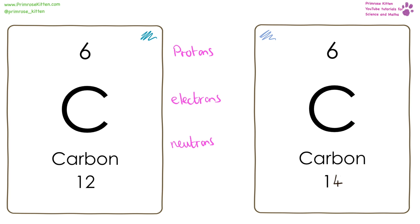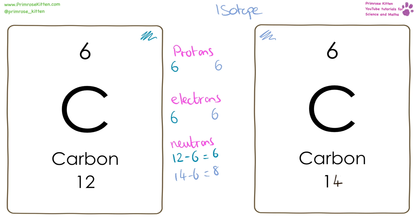Here we have two isotopes of carbon. They have the same atomic number of 6 but different mass numbers. Each has 6 protons and 6 electrons. One has 12 minus 6 = 6 neutrons, and the other has 14 minus 6 = 8 neutrons. An isotope is an atom that has a different number of neutrons.